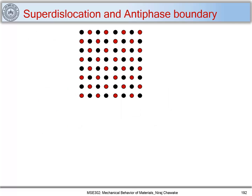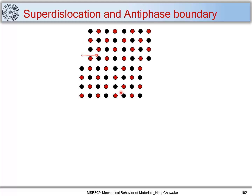Now let's look at dislocations in intermetallic or ordered solid solutions. To find a dislocation, we make one atomic layer glide over another and observe how the structure changes. In this case, the lattice translation is from this point to this point. Let's move the top crystal over the bottom crystal.